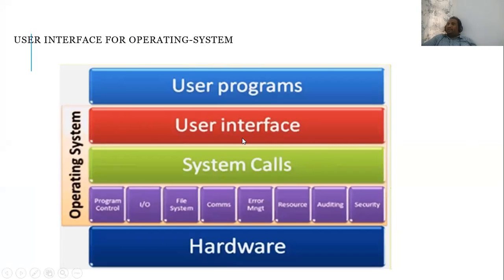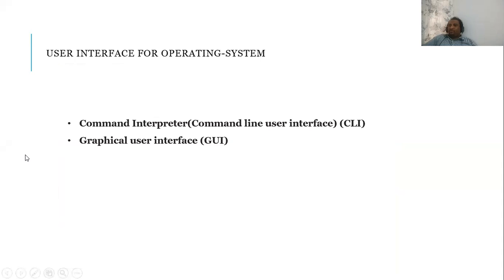These are the things that an operating system is going to have. First we will see what are user interfaces, then we'll come to what are various system calls. When we come to user interface, as I gave you an overview, we'll be having two types of user interfaces: one is command line and the other is graphical. I've opened a DOS operating system previously to demonstrate command line — I'll show that again.